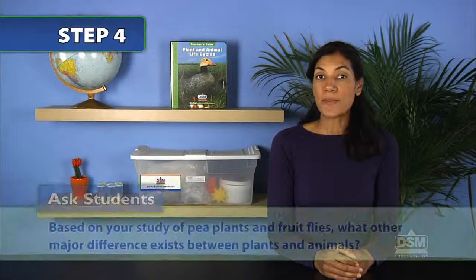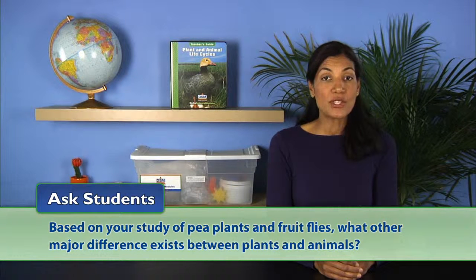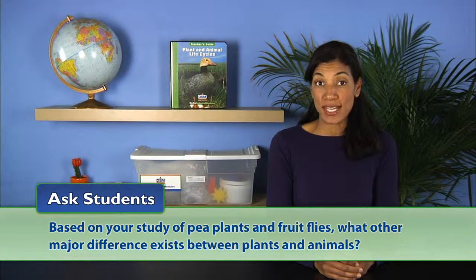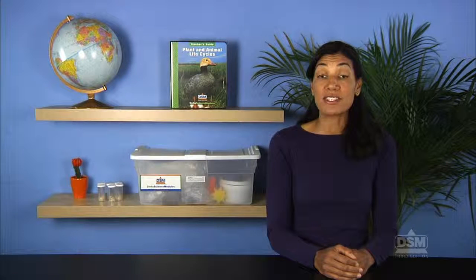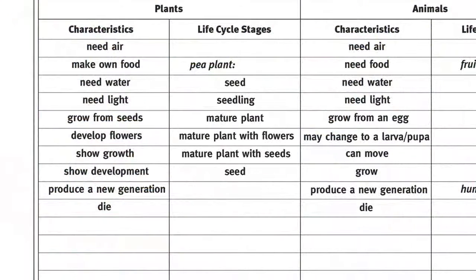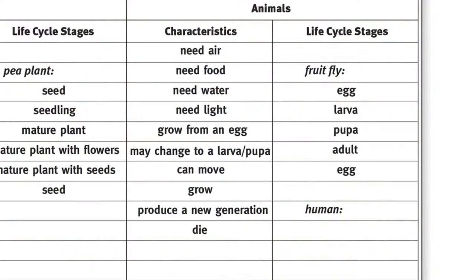Then ask, based on your study of pea plants and fruit flies, what other major difference exists between plants and animals? Students may suggest that they have different life cycles. Refer to the chart Characteristics and Life Cycles of Plants and Animals, and instruct students to record the stages in the plant life cycle. Under the life cycle stages heading on the animal side of the chart, work with students to list the stages in the fruit fly life cycle.